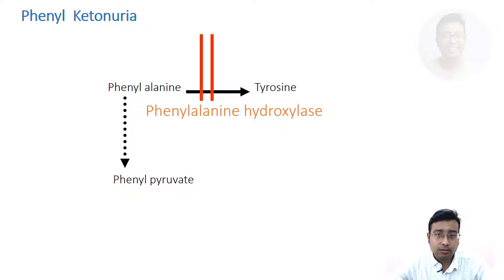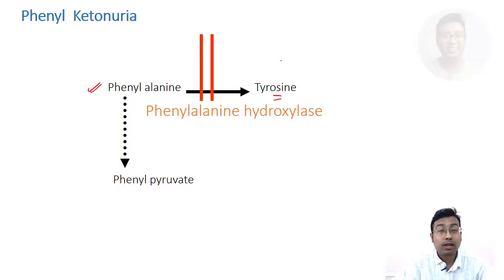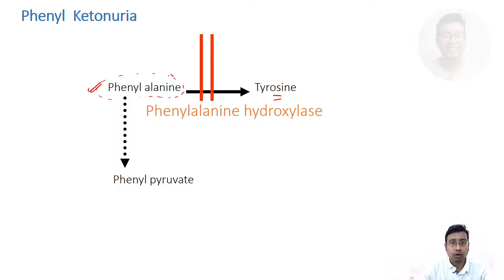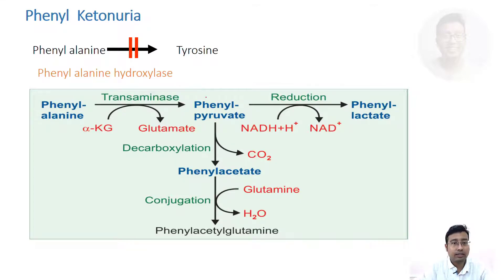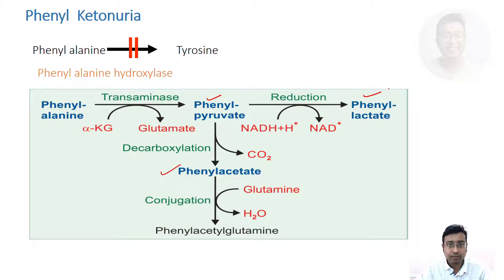Otherwise phenylalanine is converted to tyrosine, as we all know. But since in this case this conversion pathway is totally blocked, phenylalanine will be shunted or diverted to form other products. These are the alternate products from over-accumulated phenylalanine. Phenylalanine can be transaminated to form phenylpyruvate, decarboxylated to form phenylacetate, and further reduced to form phenyllactate.